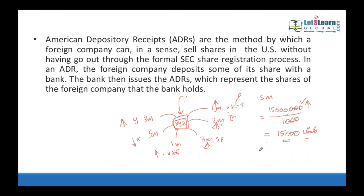The US citizen enjoys the incremental value — from $1,000 to $1,066 per unit — without needing to directly investigate foreign investments, risk, or return. They simply depend on the ADR — the American Depository Receipt. This allows US citizens to benefit from global diversification through a familiar domestic instrument managed by a US bank.